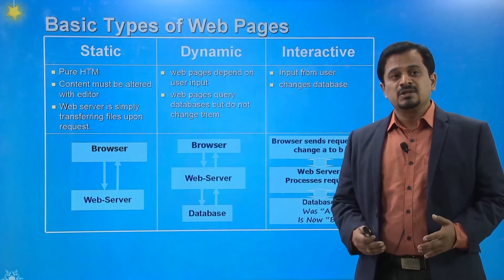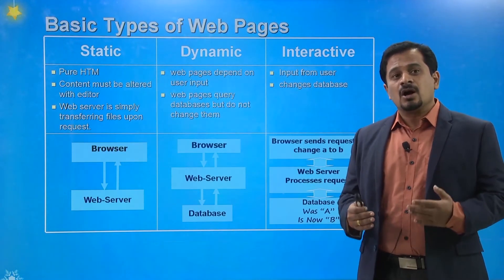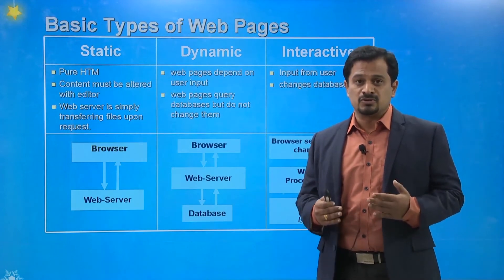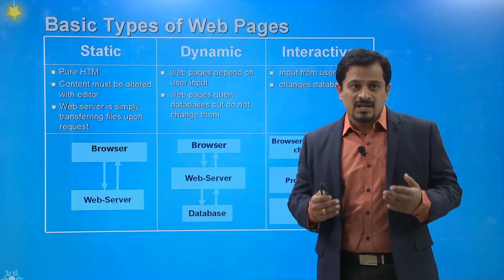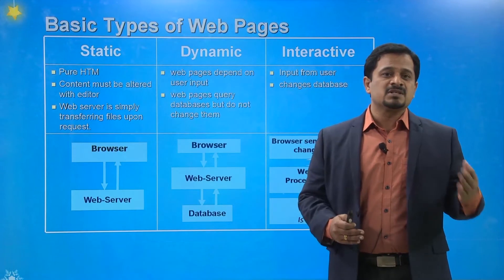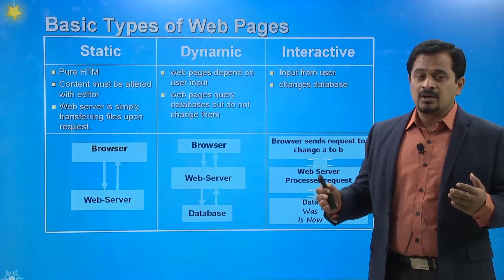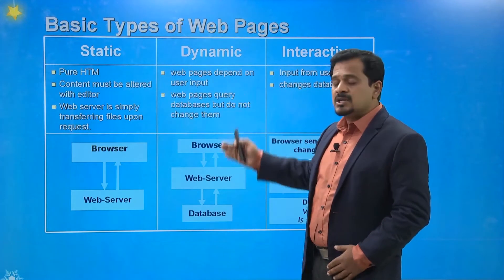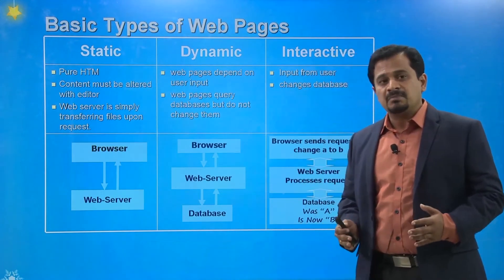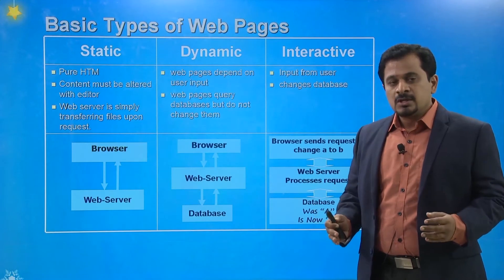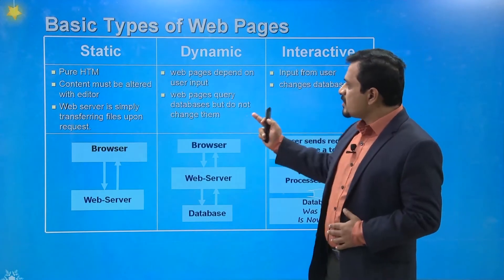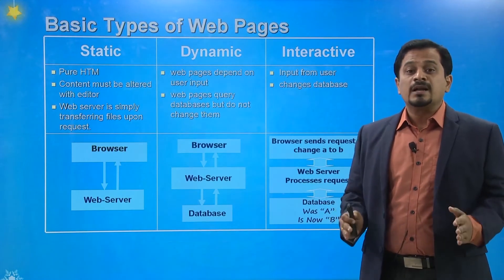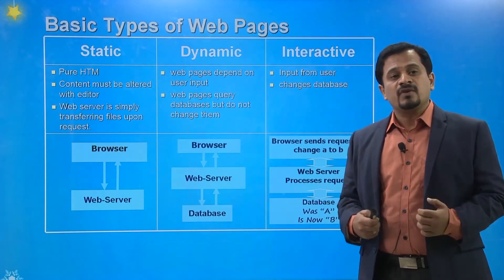The successfulness of e-government is based on the types of web pages it supports. These types of web pages start from static to interactive via dynamic. Static web pages are purely designed based on hypertext markup language (HTML). Here in static web pages, all the contents are simply loaded into the website, and only the editor can modify things.